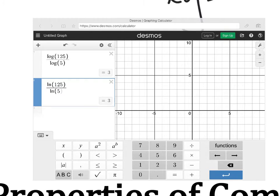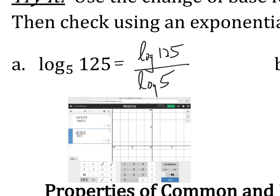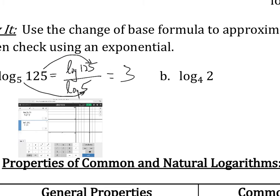The change of base formula just says we take the log of this, this is called the argument, over the log of the base, and that's going to give us our answer. And this is called the change of base formula.